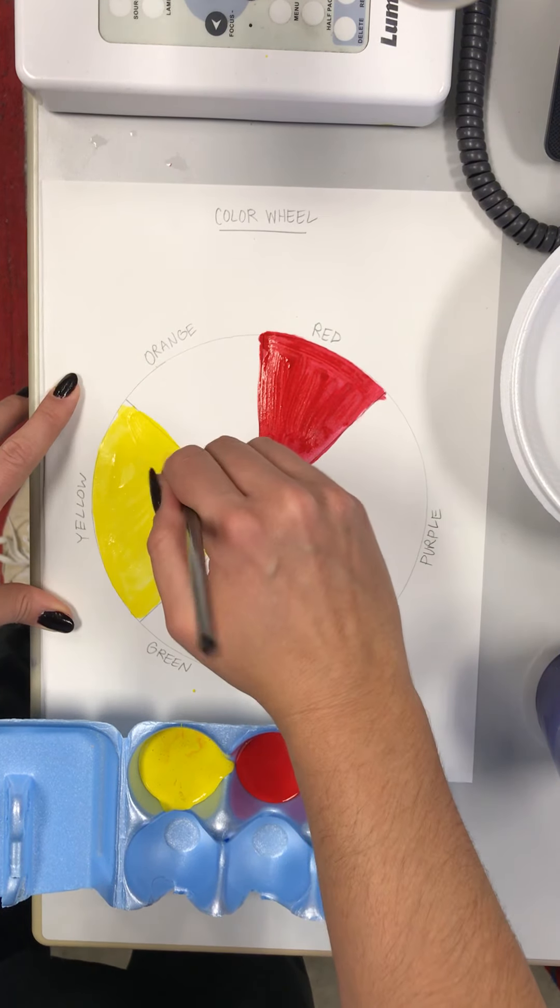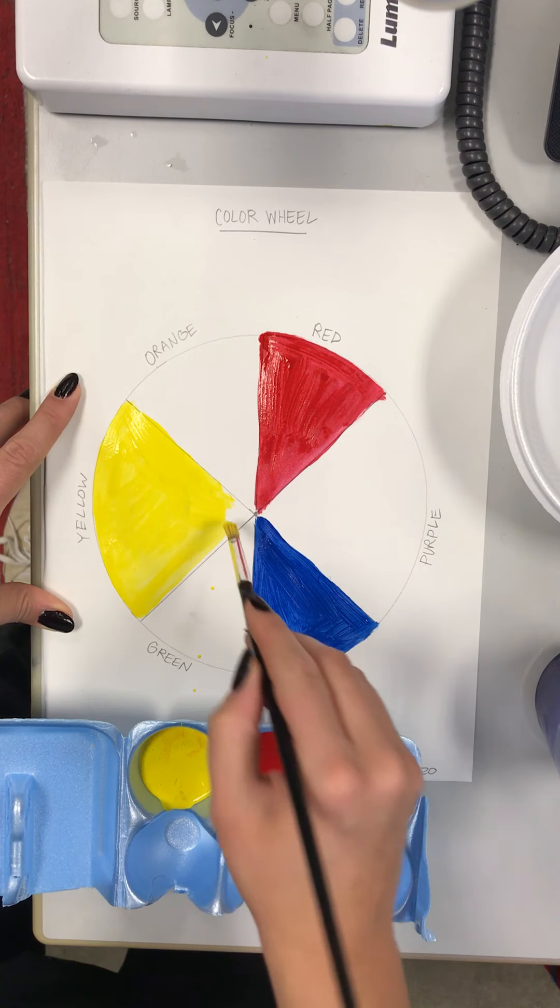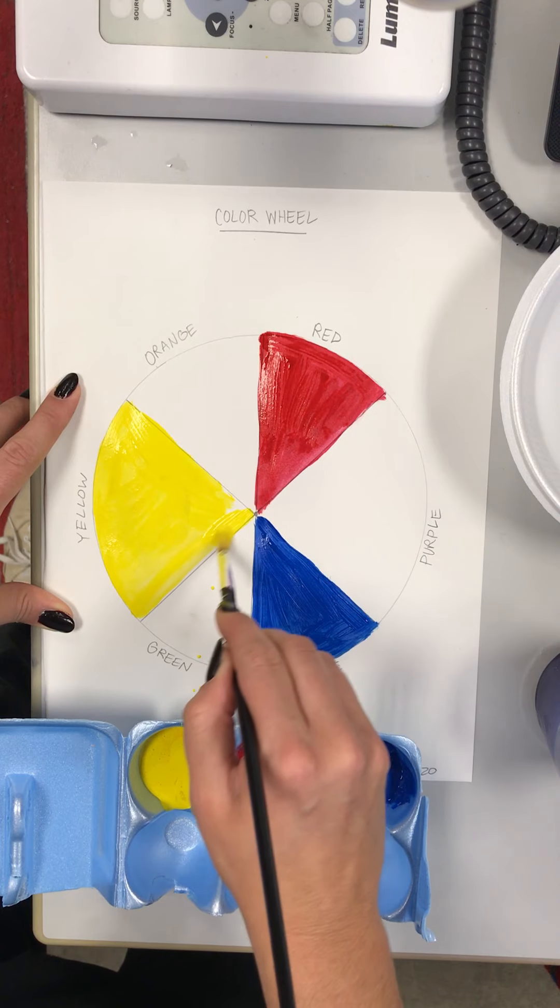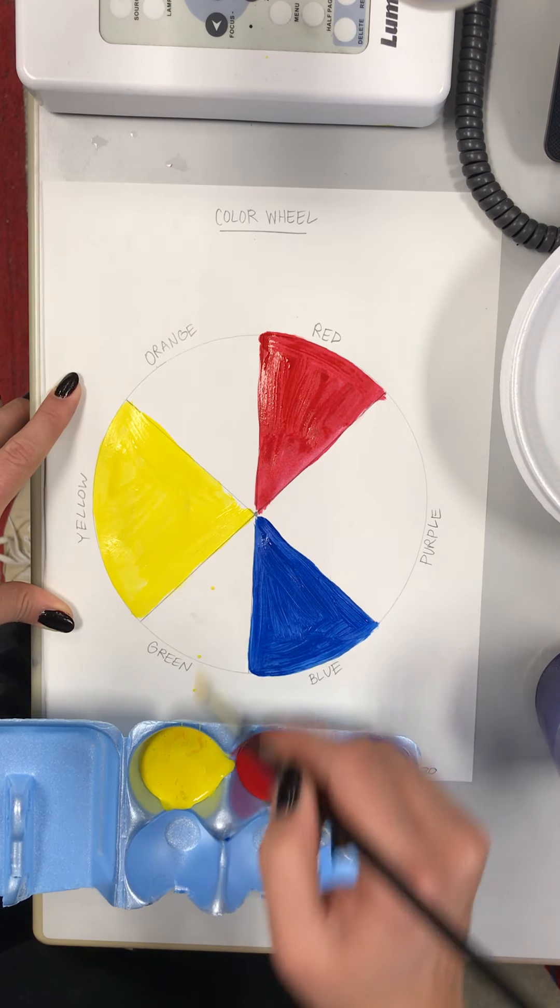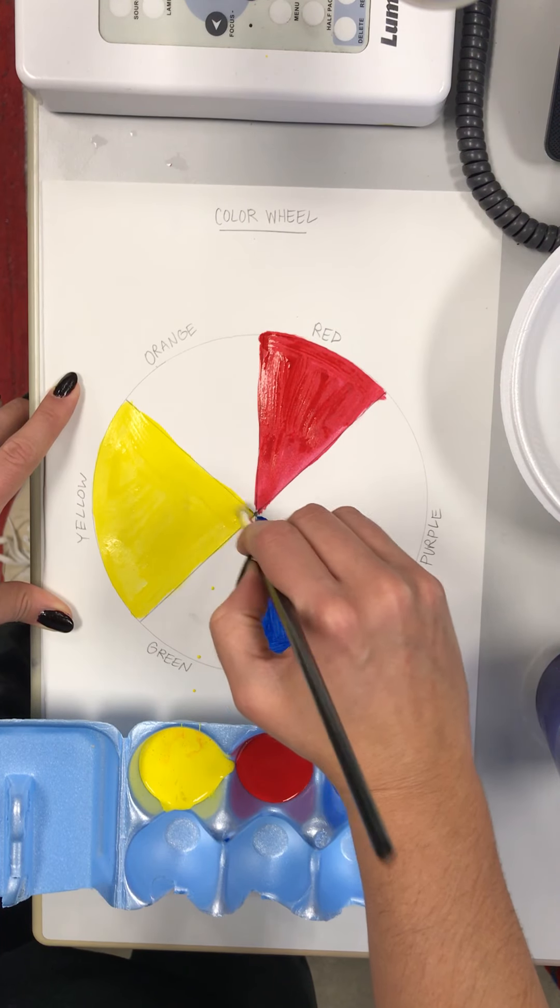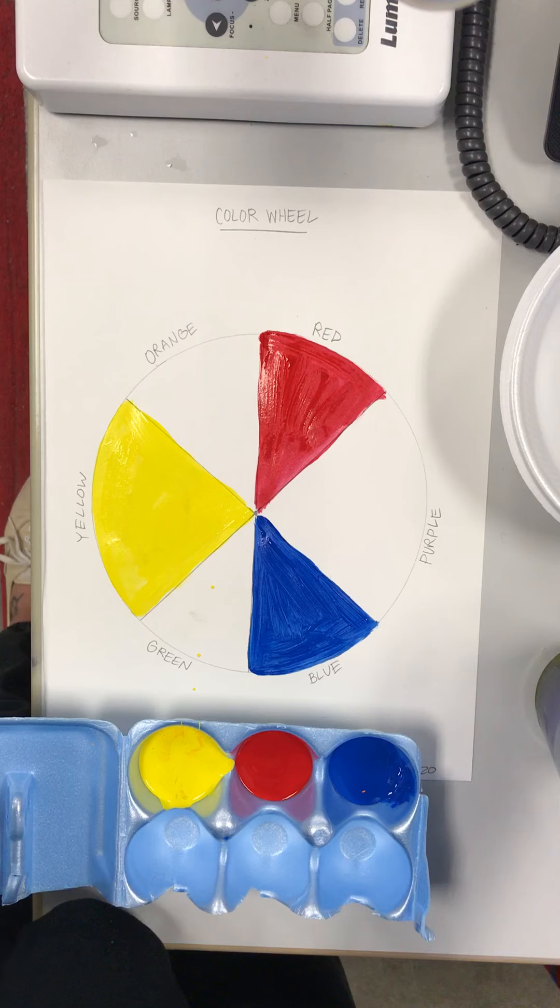Do your best to stay in the lines, but don't stress if it's not absolutely perfect. We want to do our best to practice good craftsmanship, so make sure that you get them as close in the lines as possible. We've got our primaries done, so the thing we're gonna do next is our secondary colors.